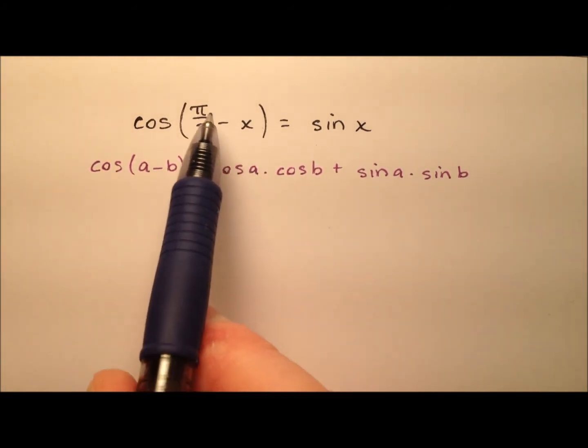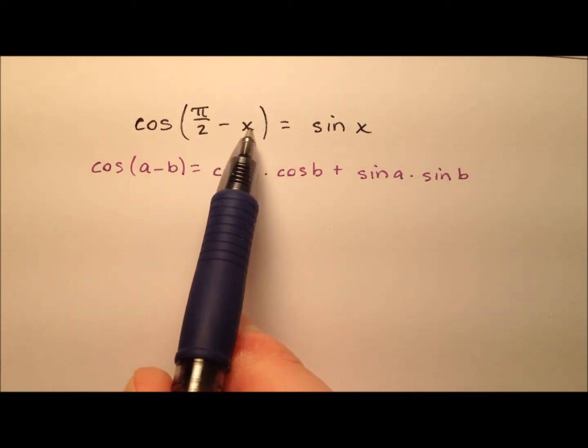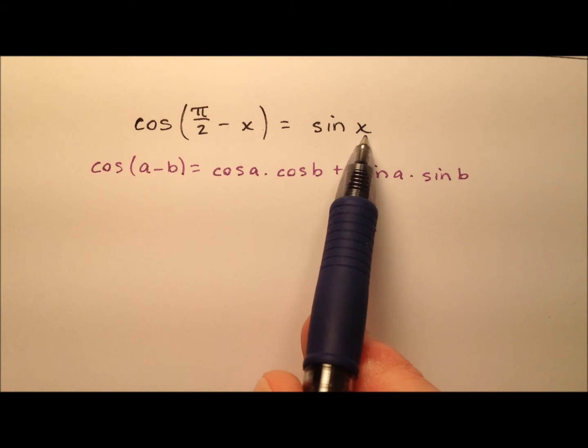What is it that we really have here? Well, pi over 2 is 90 degrees, so this angle is going to be 90 degrees minus x, along with this angle x.